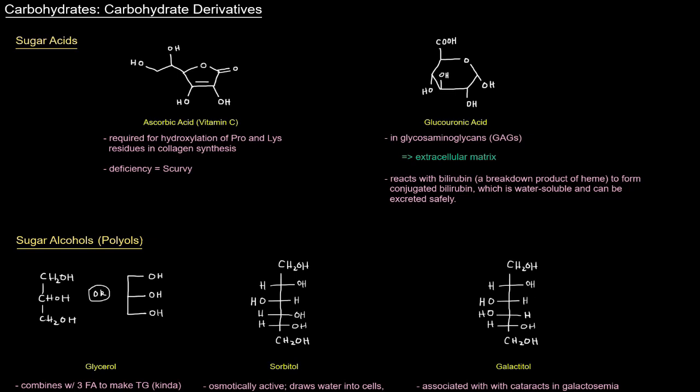First one here is ascorbic acid or vitamin C. You can see that it's kind of got the furanose form, this five-membered ring here with that oxygen as a member of the ring. So it is carbohydrate derived, and vitamin C is important because it's required for the hydroxylation of proline and lysine residues in collagen synthesis, and that contributes to the structural integrity of collagen. And a deficiency in vitamin C results in scurvy, and some of the key symptoms include bleeding gums and bruising really easily.